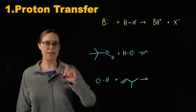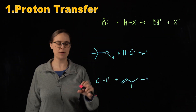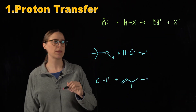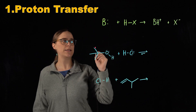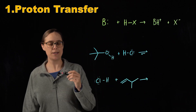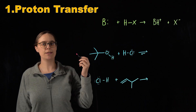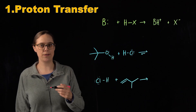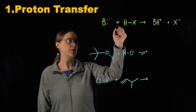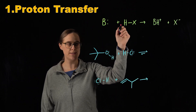Pattern number one is proton transfer. I have a generic equation with variables, and we're going to do two specific examples. Proton transfer is just what the name sounds like — a proton, meaning a hydrogen cation, is being transferred from one thing to another. It's basically an acid-base reaction. H is a hydrogen, and it does need to be acidic.